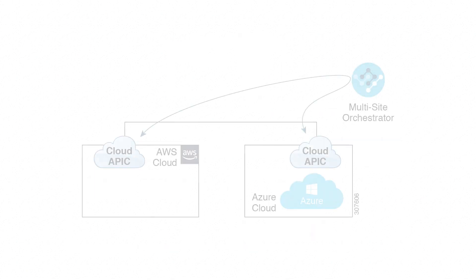You can also use the Cisco ACI multi-site orchestrator to establish connectivity between multiple cloud sites. Without an on-premises site, this is known as multi-cloud. These connections can be between multiple AWS public cloud sites, or between multiple Microsoft Azure public cloud sites.